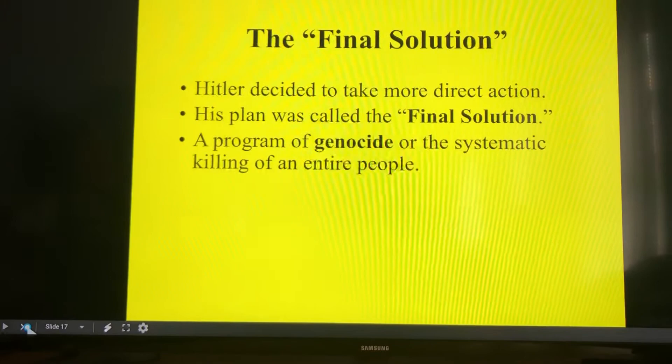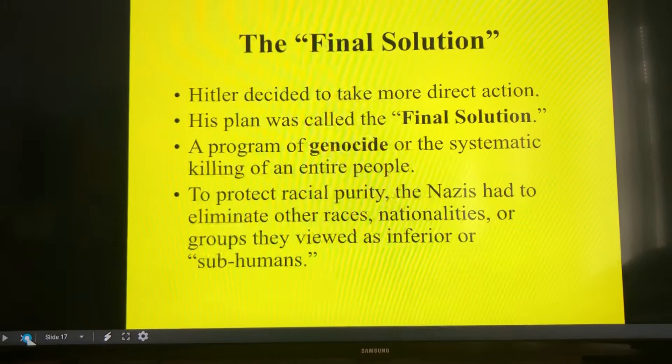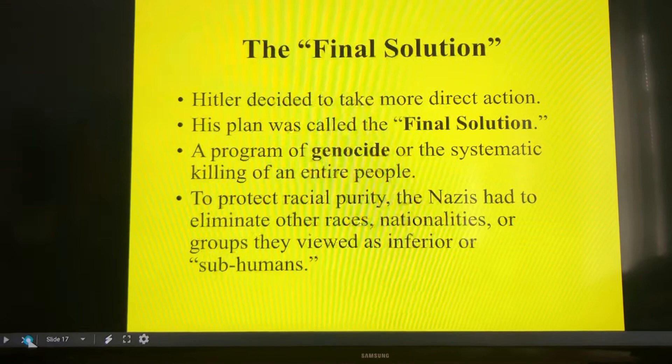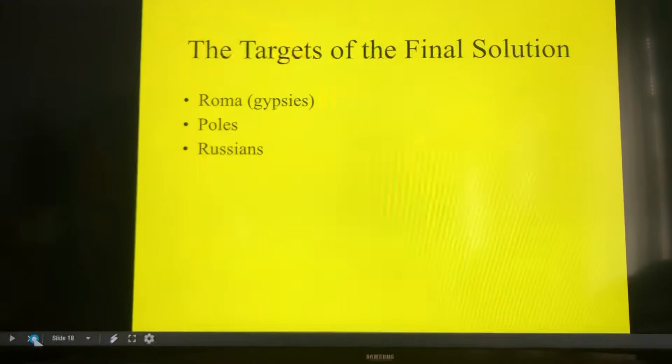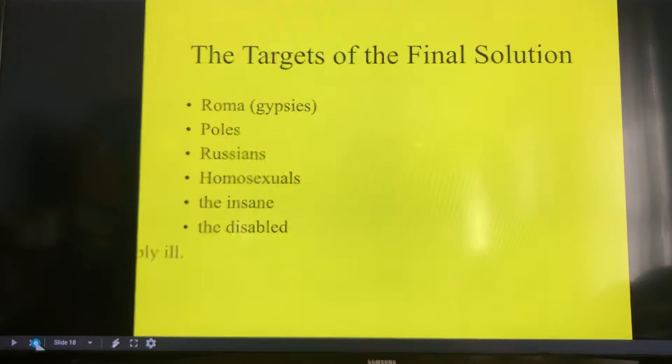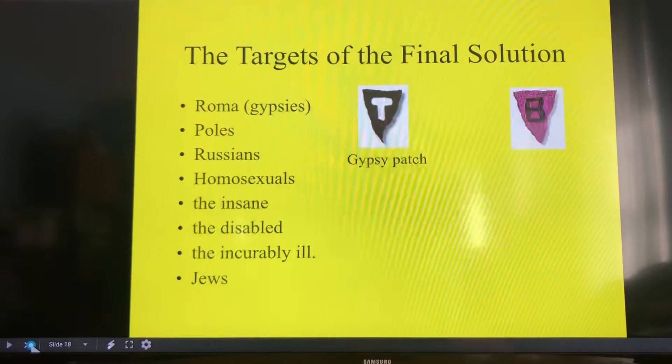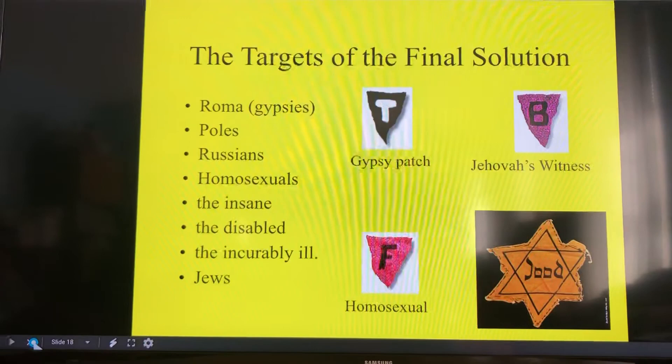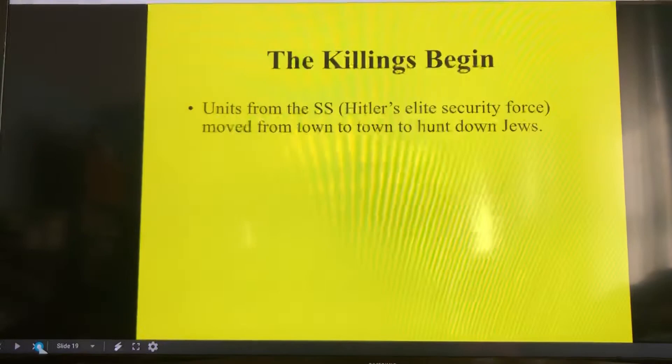When the ghettos weren't working, Hitler decided to go for what's called the Final Solution — a program of genocide, or systematic killing of an entire people. To protect his racial purity, they had to eliminate all races, nationalities, or groups viewed as subhuman or inferior. The targets included the Roma or gypsies, the Poles, the Russians, anyone who was gay, homosexuals, the insane, the disabled, the incurably ill, and the Jews. They had to wear patches — the Star of David was not the only patch worn; other groups were identified by different patches, and sample patches from the time period are shown.